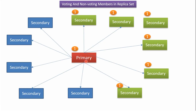Here, 1 primary node and 11 secondary nodes are present. Of those, 1 primary node and 6 secondary nodes are eligible for voting, so a total maximum of 7 members are eligible for voting. The remaining are non-voting members.